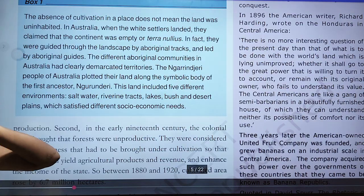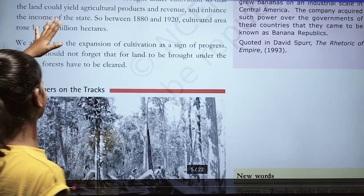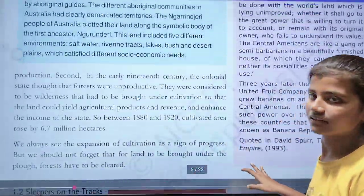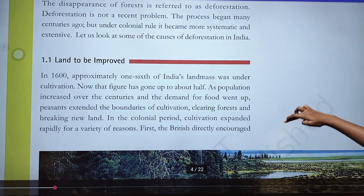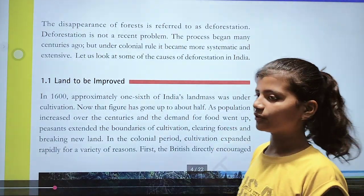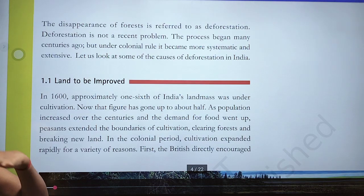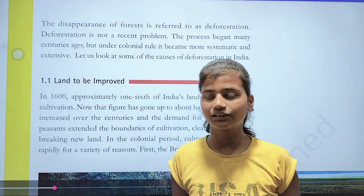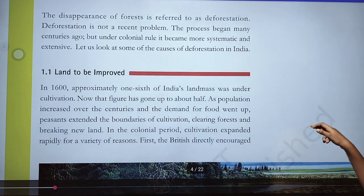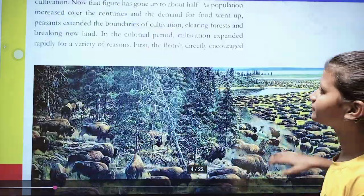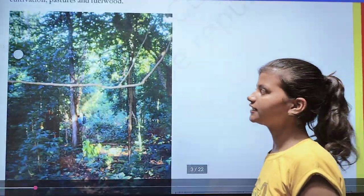We cleared forests only for food cultivation. This is what is meant by land to be improved. The demand for land also increased because the population rate highly increased, and with it the demand for food grain also increased. That's why land had to be improved.